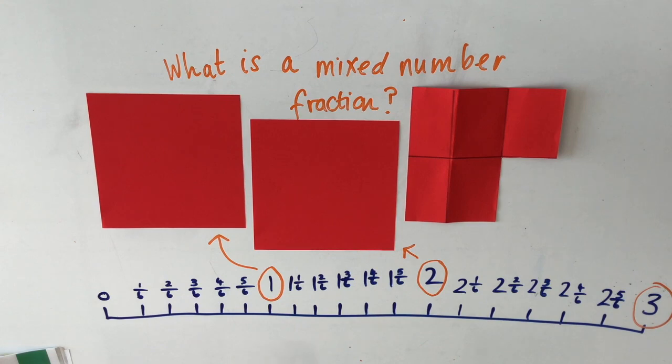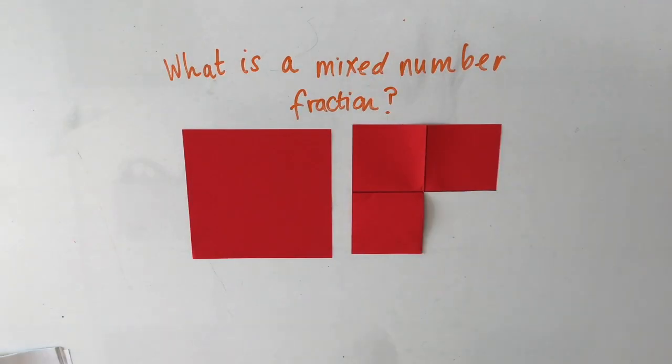Let's take a look at another example. Here I've made another mixed number fraction. Take a look and see if you can work out what it is. Hopefully you've seen that we've got one whole piece of paper here, but what is the fraction that's less than the whole? We can look at it carefully and see that it's been divided into four. That means that we're talking about making quarters. So this mixed number fraction is one whole and three quarters.